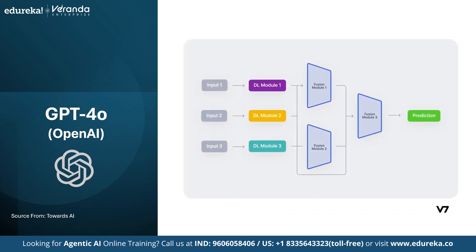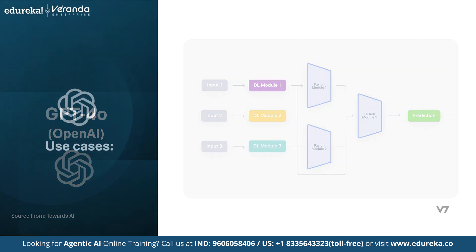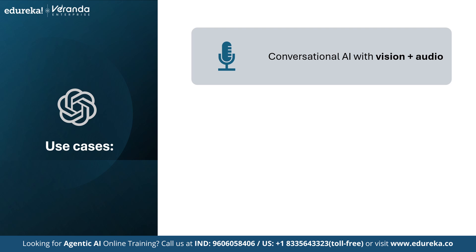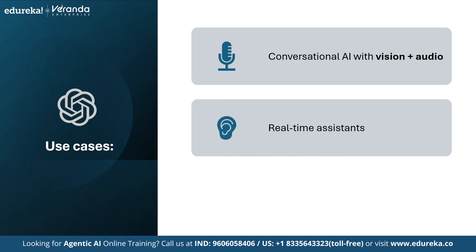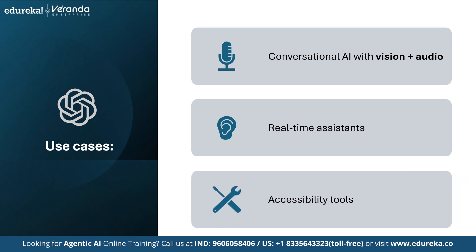The next model is GPT-4o from OpenAI. It's an optimized multimodal model that accepts text, images and audio in real time. It uses fused embeddings and parallel processing for speed, and works as a true interactive assistant. Use cases include: conversational AI with vision plus audio; real-time assistance where you upload an image and get an explanation instantly; and accessibility tools — for example, describing surroundings for visually impaired users. These models represent different approaches to multimodality: some align separate encoders like CLIP, some bridge vision plus LLMs like BLIP-2, and some are natively multimodal like Gemini and GPT-4o.